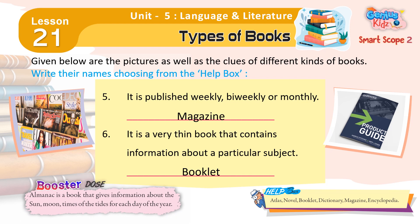Almanac is a book that gives information about the sun, moon, and times of the tides for each day of the year.